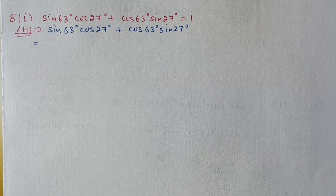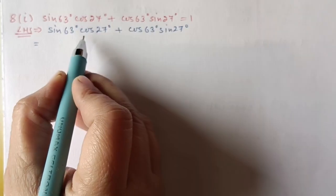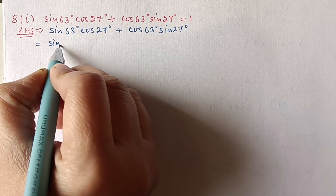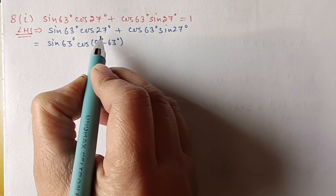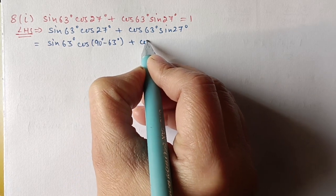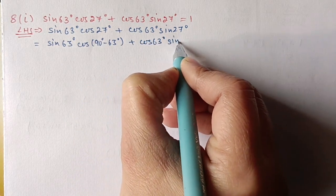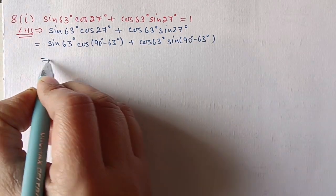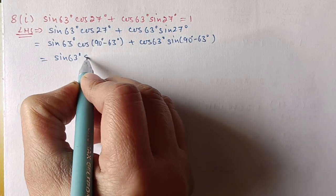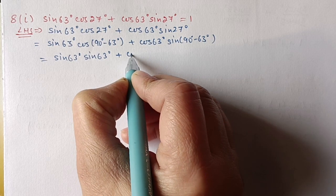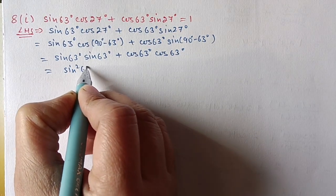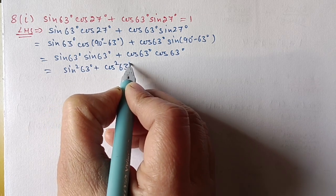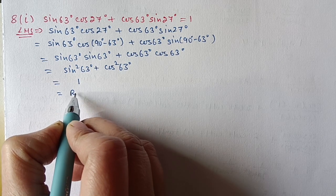Question 8, first part: prove that sin63·cos27 + cos63·sin27 = 1. From these pairs, any one we have to change. cos27 = cos(90−63), and sin27 = sin(90−63). cos(90−θ) = sinθ, so cos27 becomes sin63. sin(90−θ) = cosθ, so sin27 becomes cos63. We get sin63·sin63 + cos63·cos63 = sin²63 + cos²63 = 1. Right side obtained, hence proved.